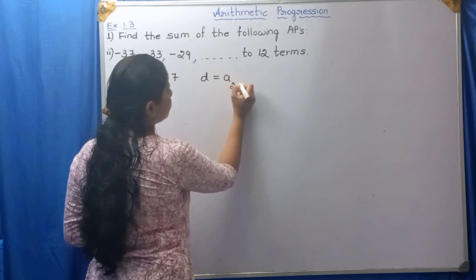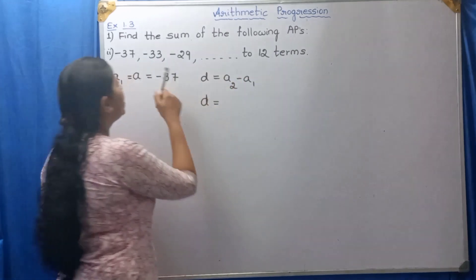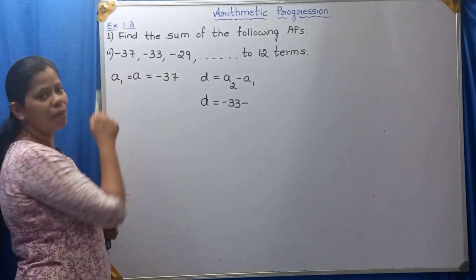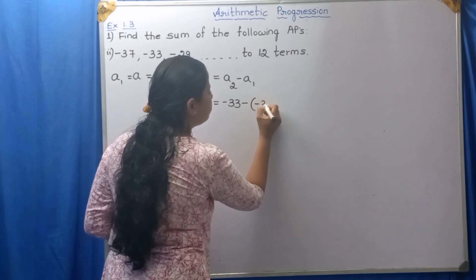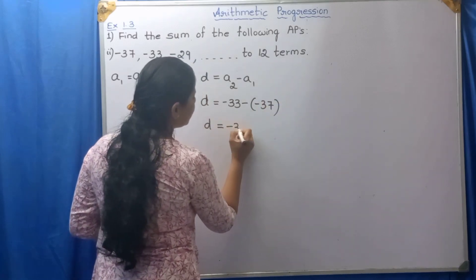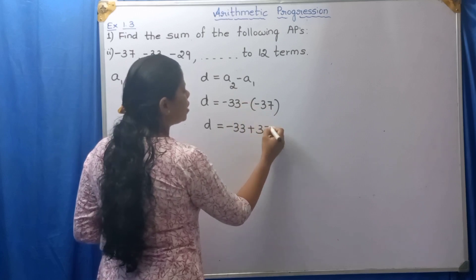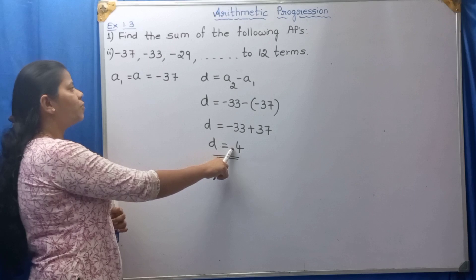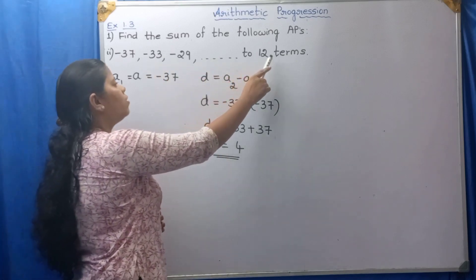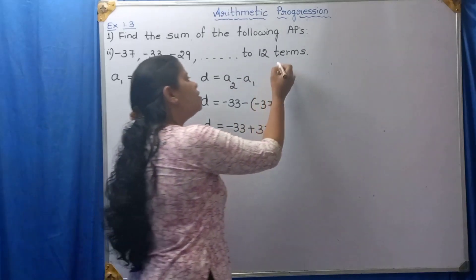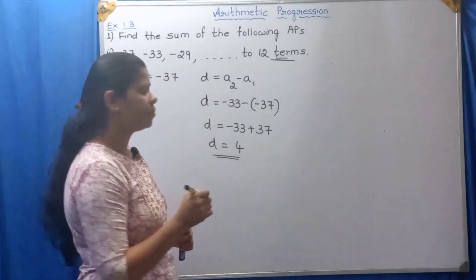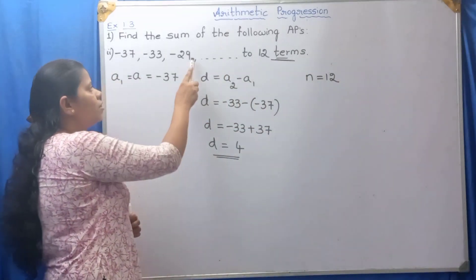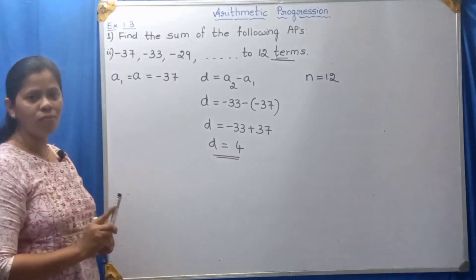D equals A2 minus A1. A2 is minus 33, minus A1 which is minus 37. So D equals minus 33, and minus into minus is plus 37. Minus 33 plus 37 is positive 4. D equals 4. We have to find the sum up to 12 terms, so N equals 12.